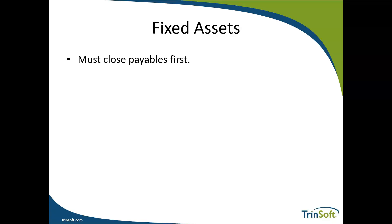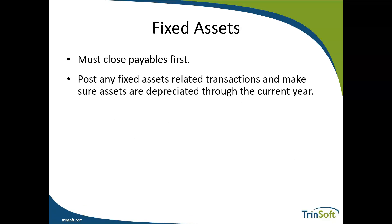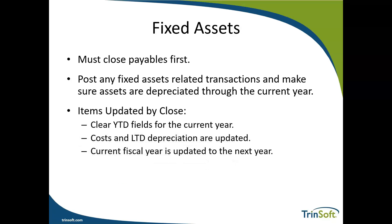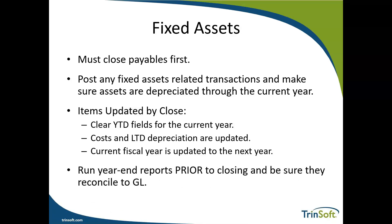The fixed assets module should not be closed until the payables module has been fully closed first. If you have multiple fixed asset books, you can close them each individually; however, each book must be closed prior to closing the general ledger. Prior to closing the fixed asset module, be sure to post any additions, charges, transfers, retirements, and any outstanding depreciation for the current year. The fixed assets close routine will clear year-to-date fields, and life-to-date depreciation will be updated — including reserves and salvage values. Finally, the current fiscal year is updated to the next year. It's also important to run year-end reports and reconcile reports prior to closing the fixed asset module.